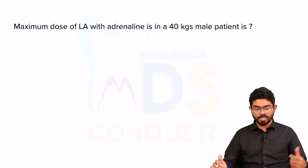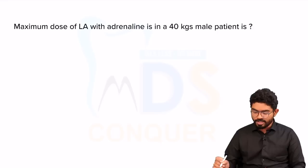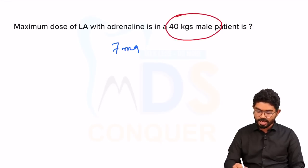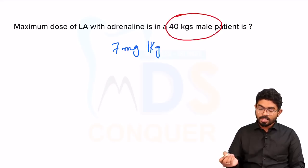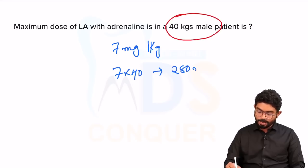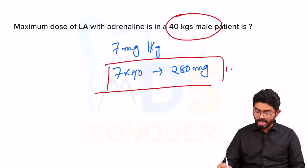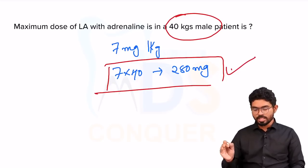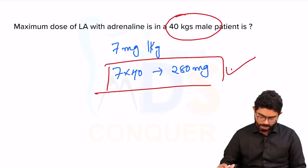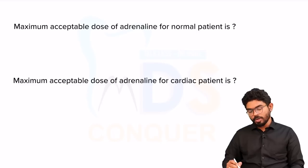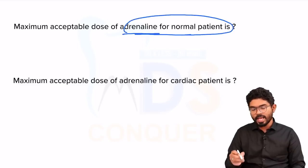The maximum dose of local anesthesia with adrenaline in a 40 kg male: 7 mg per kg, so 7 × 40 = 280 milligrams is the answer. This is the maximum amount of local anesthesia with adrenaline that can be given to that particular individual entering the department.